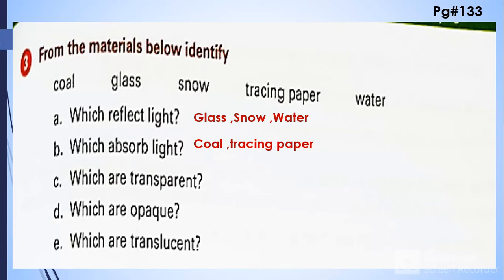Which are transparent? So the glass, water, and even though the tracing paper is partially transparent. What is opaque? So coal is opaque along with snow. What are translucent? So tracing paper is a translucent material.